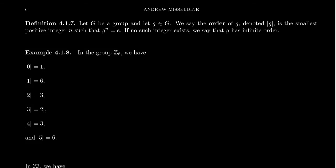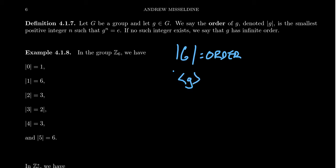Let G be a group and let little g be an element of that group. Recall that previously we've defined the order of a group: if you take the cardinality of the set associated to the group, we call this the order of the group. Now every element of the group creates a cyclic subgroup of itself, and if you take the order of that cyclic subgroup generated by g, we also call that the order of the element itself.